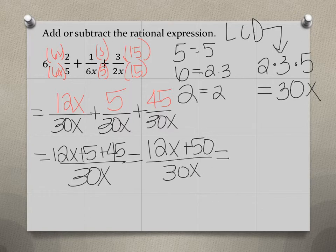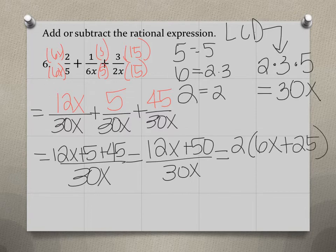And we can factor the top. We have a GCF of 2. So if we factor that out, we'll have 6x plus 25 all divided by 30x.